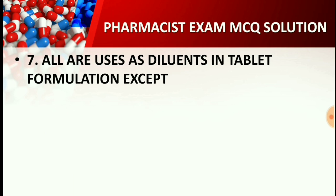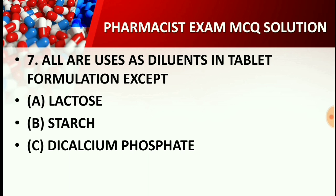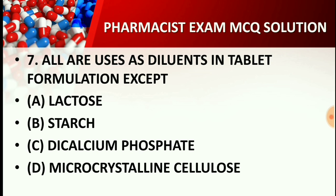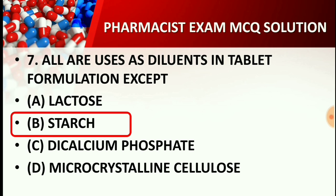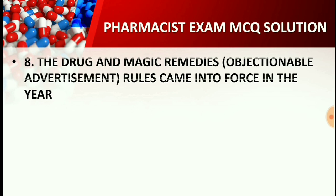Question number seven: All are used as a diluent in a tablet formulation except — Option A: Lactose, Option B: Starch, Option C: Dicalcium phosphate, Option D: Microcrystalline cellulose. The right answer is Option B: Starch. Starch is used as a disintegrating agent, while lactose, DCP, and MCC are widely used as diluents in tablet dosage forms.